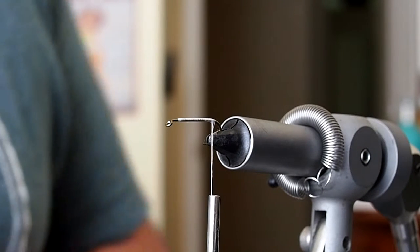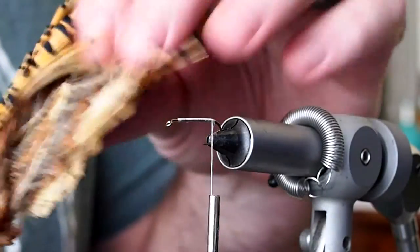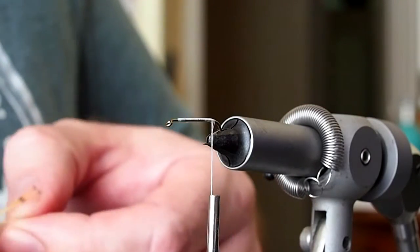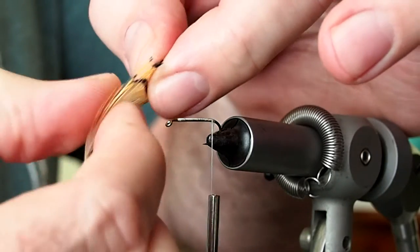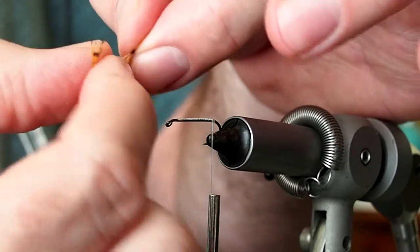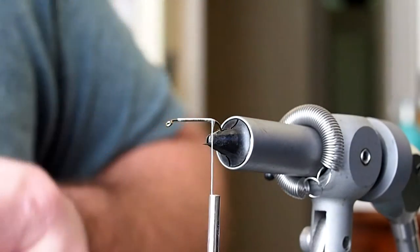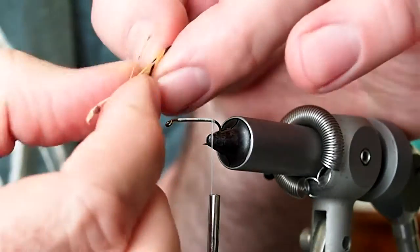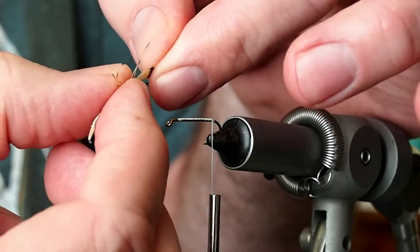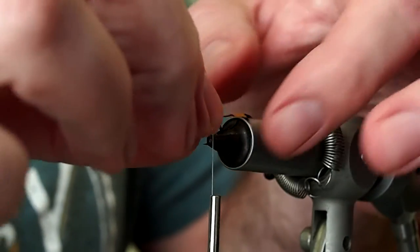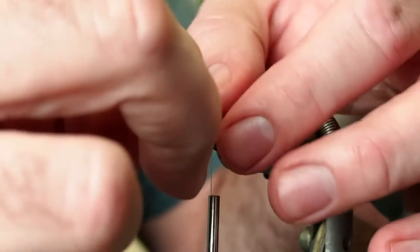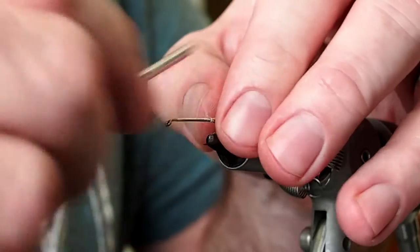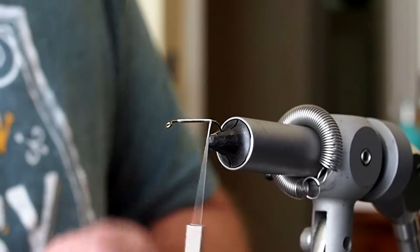The tail calls for some golden pheasant tippet, so I'm just going to pull a small feather from the neck and peel away all but that center section of the tippet there. Sometimes it wants to roll on you, so just be patient and take your time.